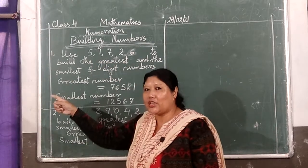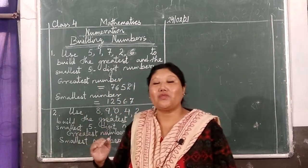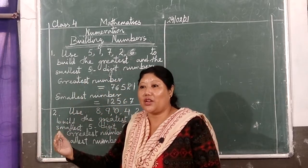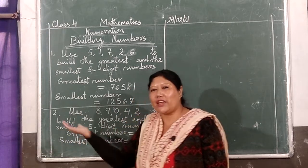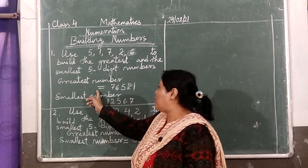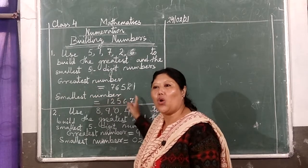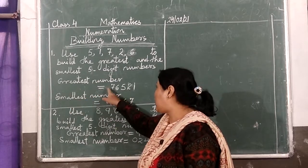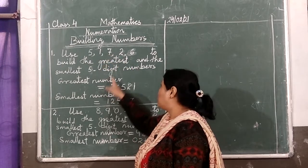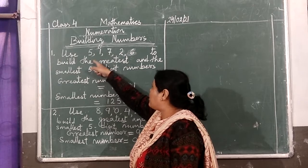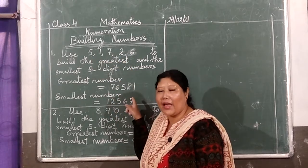Now with these digits, you have to arrange them in such a way that it will become the biggest or greatest number. So how to make it — it is easy. If it is the greatest number, you have to arrange in descending order, bigger to smaller. Like here, which one is biggest? 7 is biggest, so then 6, then 5, then 2, then 1. You can see the difference — there is no comma at all.